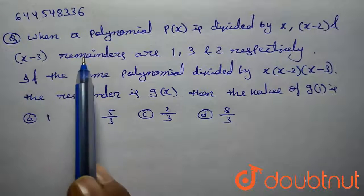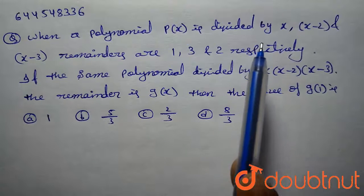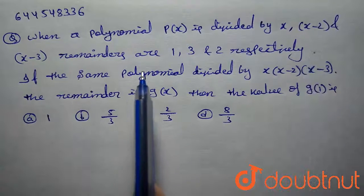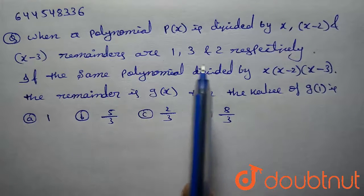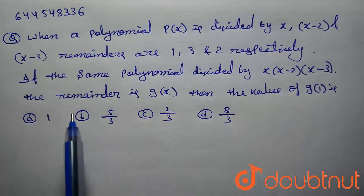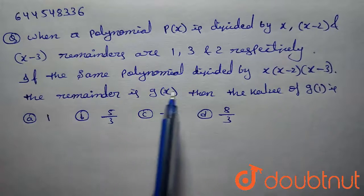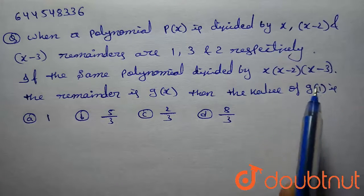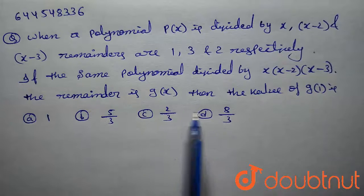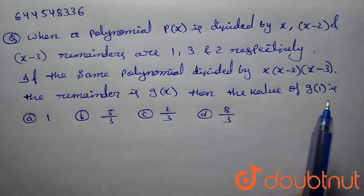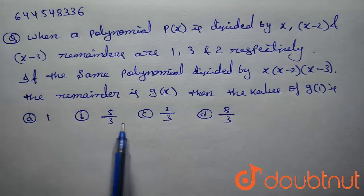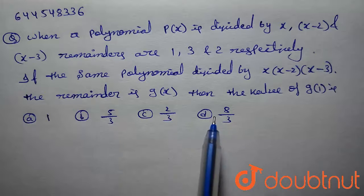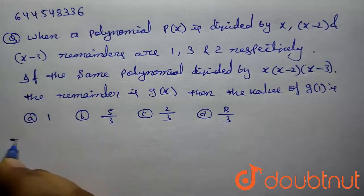Given question: when a polynomial p(x) is divided by x, x minus 2 and x minus 3, the remainders are 1, 3 and 2 respectively. If the same polynomial is divided by x(x−2)(x−3), the remainder is g(x). Then the value of g(1) is: option A: 1, option B: 5/3, option C: 2/3, option D: 8/3.